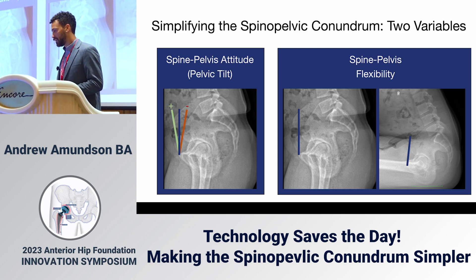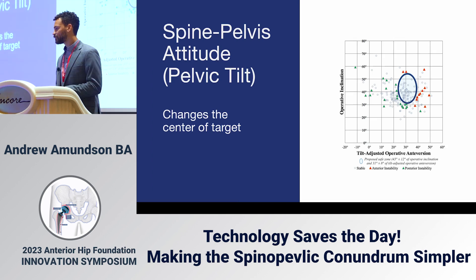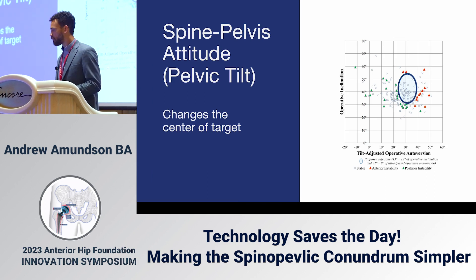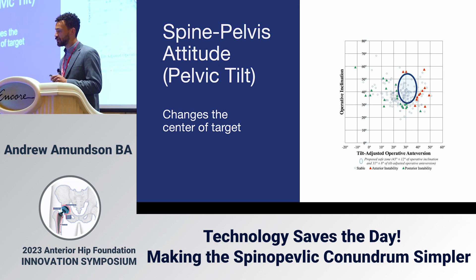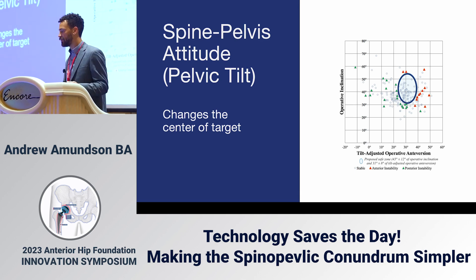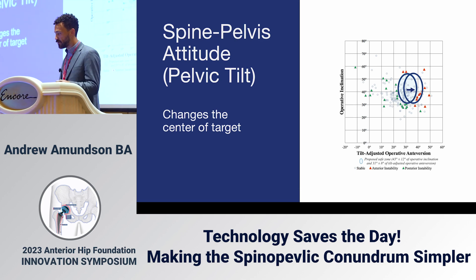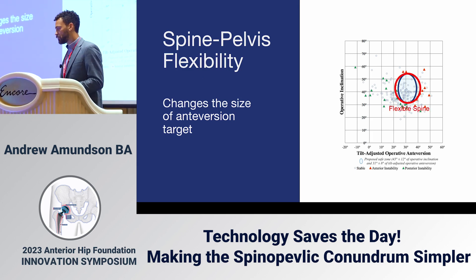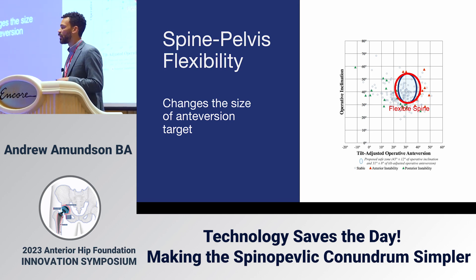Positive pelvic tilt is forward, negative pelvic tilt is backwards. Pelvic tilt simply changes the center of your target — a patient with positive pelvic tilt has a target slightly higher in anteversion than someone with normal pelvic tilt. Spine pelvis flexibility changes the size of your anteversion target, so a stiff spine will have a more narrow anteversion target while a normal spine will have a wider range.